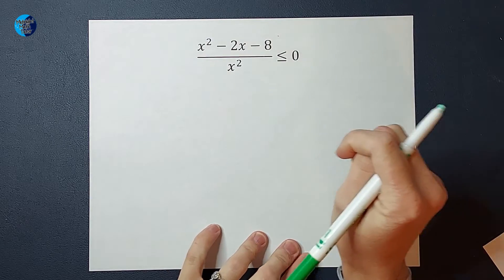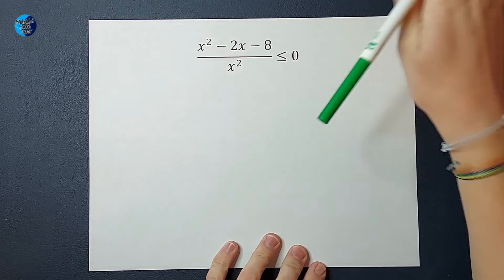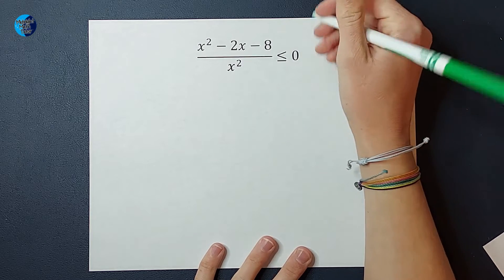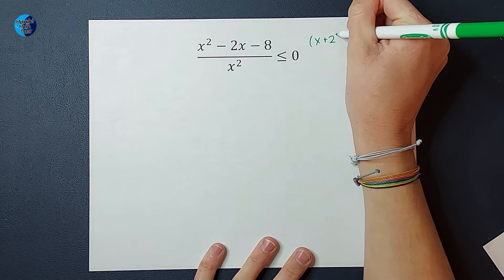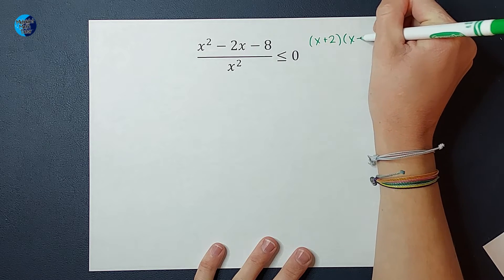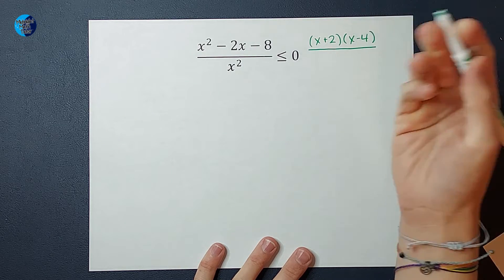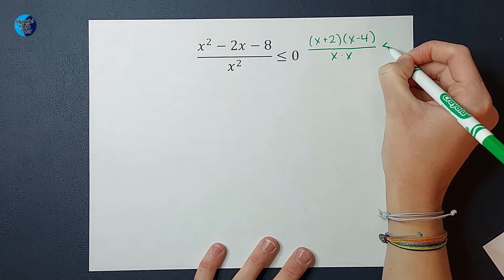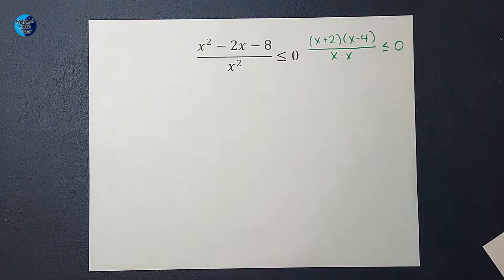From there, we are going to see if anything can factor. And here we can. If you need a factoring review, I'll link you in the corner. But I'm just going to tell you that this factors to x plus 2 times x minus 4 on top. And on bottom, we could write it as x times x if we wanted to. So kind of personal preference if you want to write it like that or just leave it as x squared.